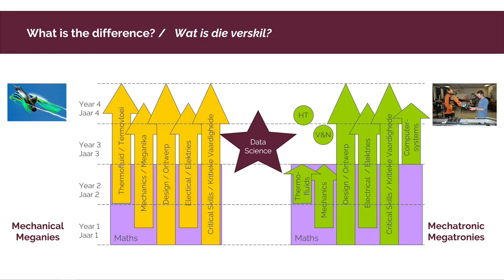To show the difference between the mechanical and mechatronic programs, on the left you see the mechanical program and on the right you see the mechatronic program. The first two years are basically identical, so you can easily change between the two programs during that time. We focus mainly on the mathematical and science foundations in the first two years, but we also start with the main subject streams in these two programs.